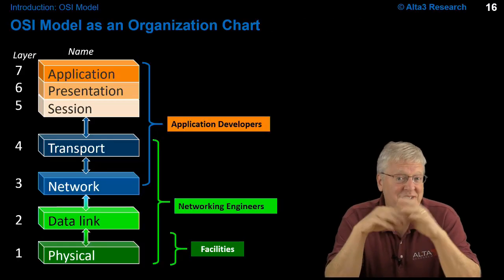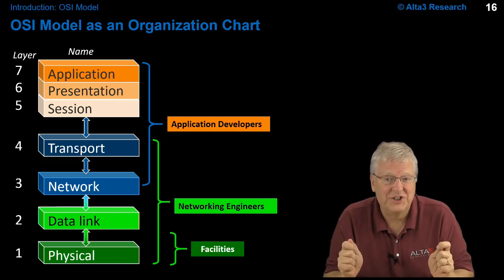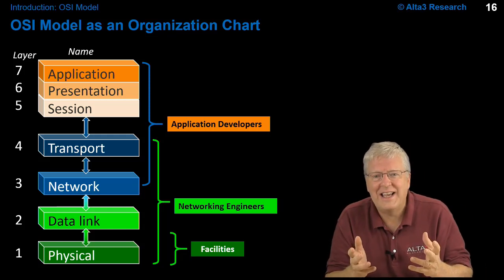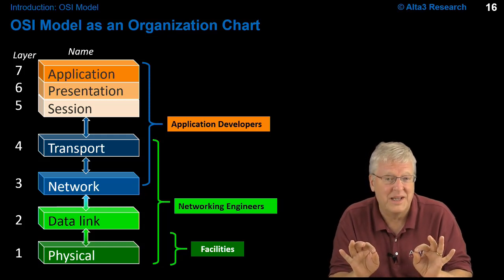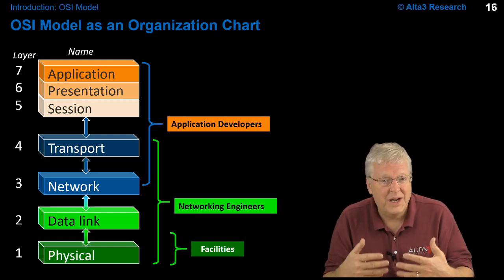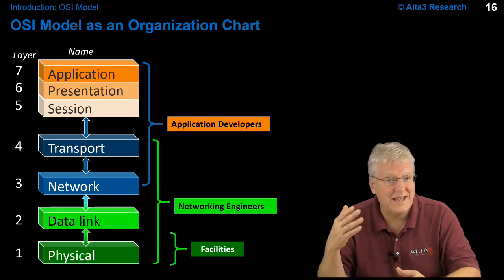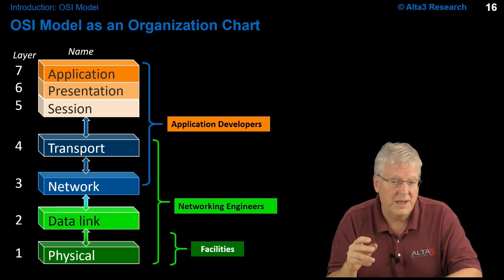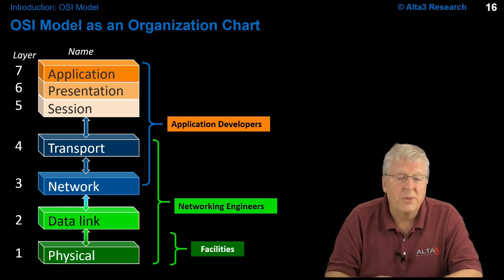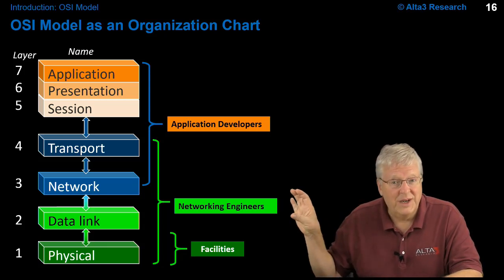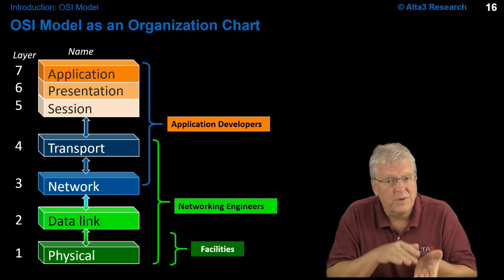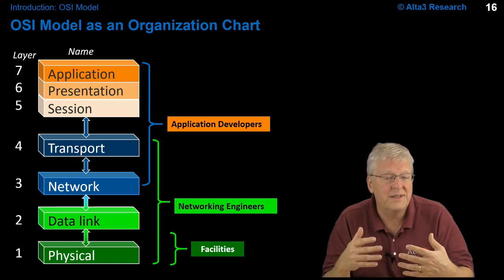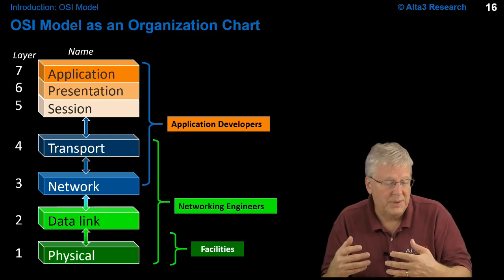Another way to look at the OSI model is as an org chart. The model is complex, and knowing the entire stack is difficult — just knowing one layer can be tricky. Application developers who write code primarily live at layers 7, 6, and 5. They reach down into the socket, into the transport and network layer, and that's a solid overlap with network engineers. Network engineers are concerned from the physical layer all the way up through to the transport and port address, so there is a necessary overlap between networking and application developers.